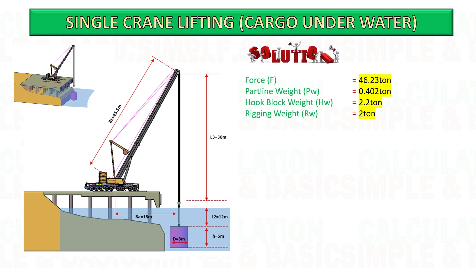Now we need to add also other accessories, like crane hook block, rigging weight and part line weight. After getting the total weight, multiply it by safety factor 1.25 to get the minimum crane capacity required.